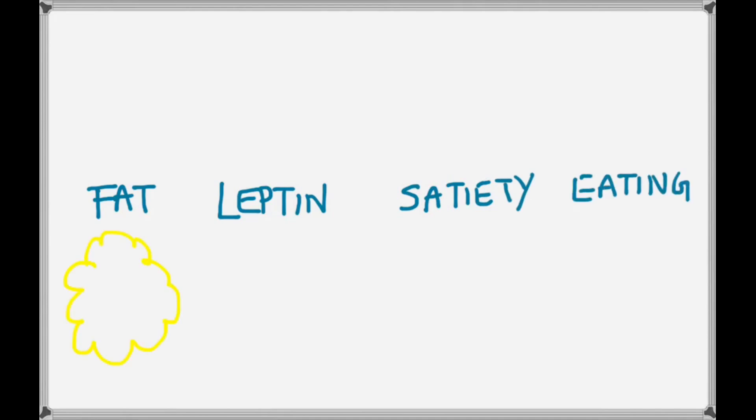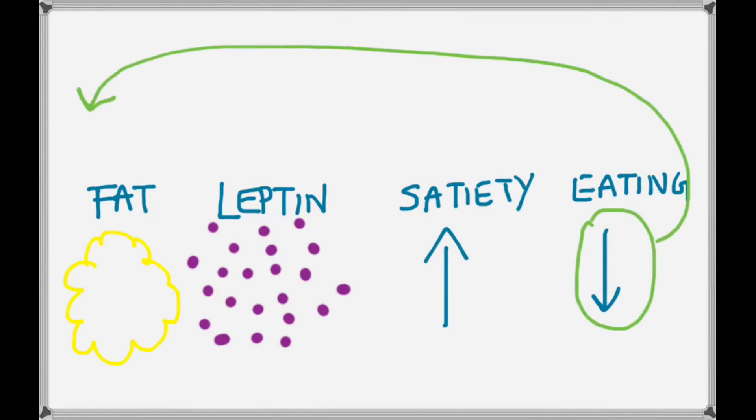So as fat levels begin to increase in an organism, so will the amount of leptin. With an increasing amount of leptin, there will be an increasing sense of satiety or fullness, and therefore a decrease in the consumption of food, a decrease in eating. As the animal eats less, it's going to therefore start to reduce its fat stores.